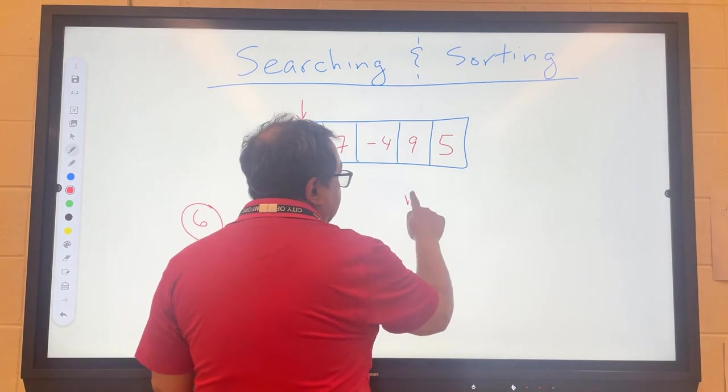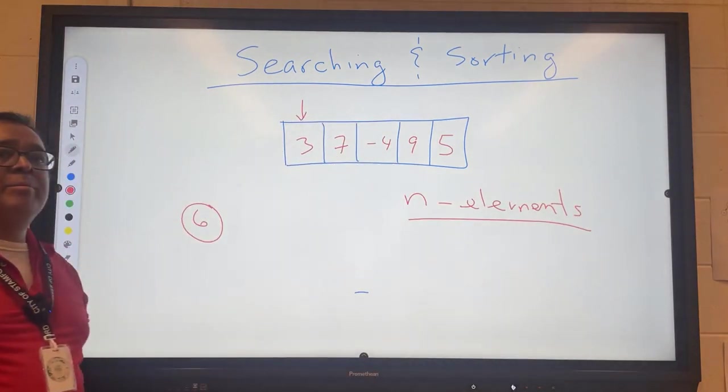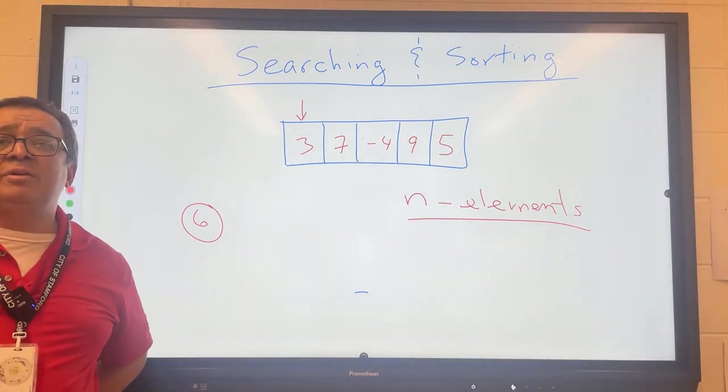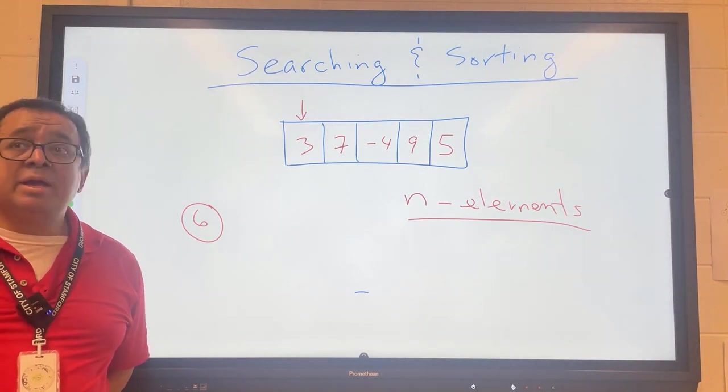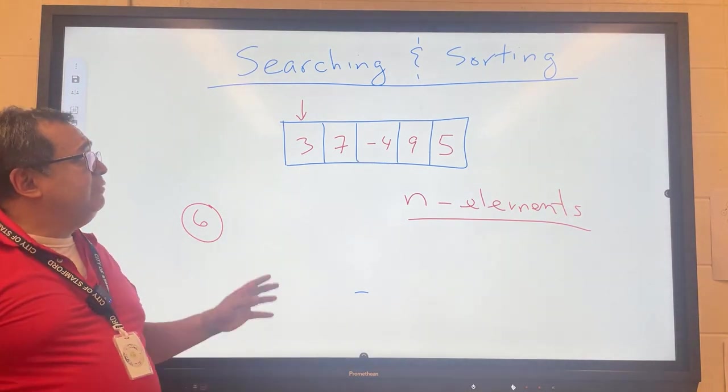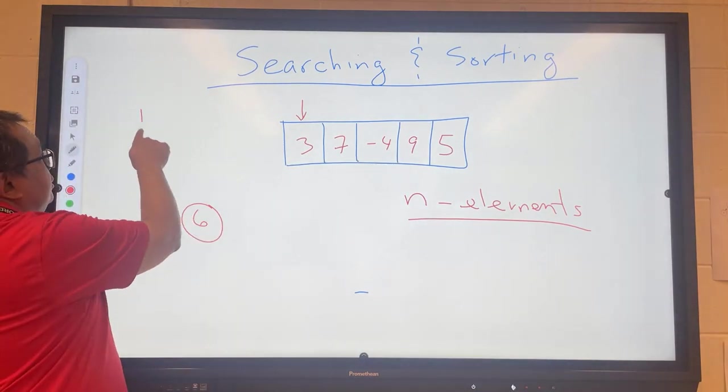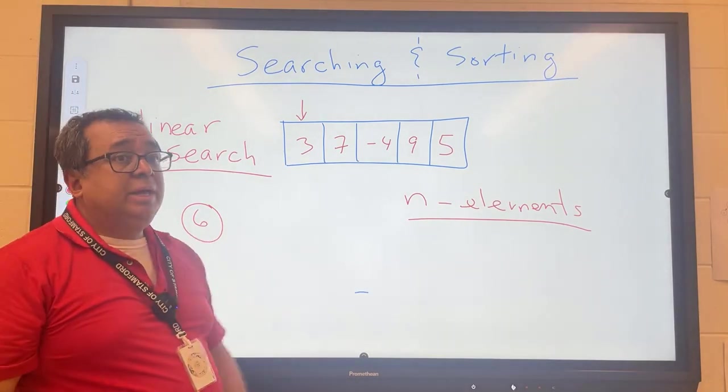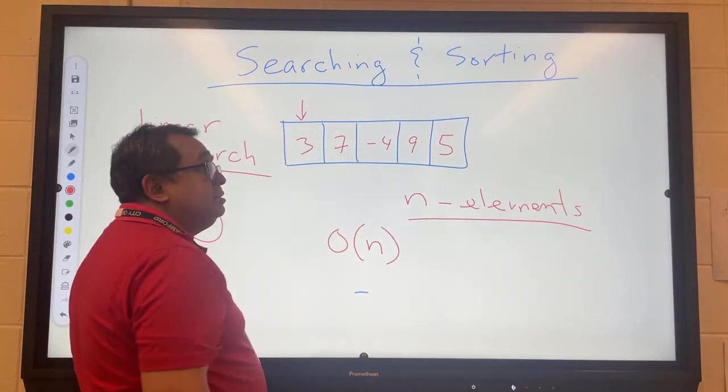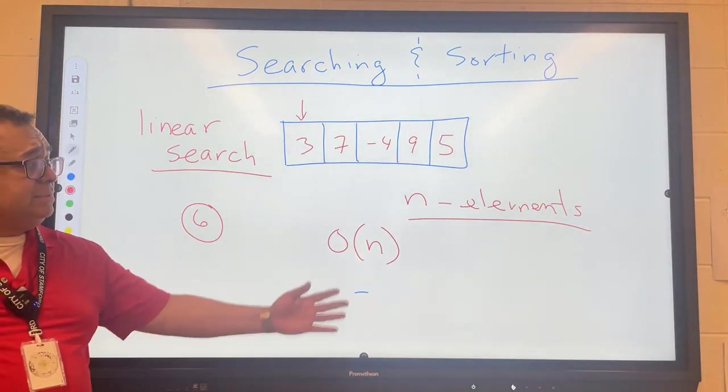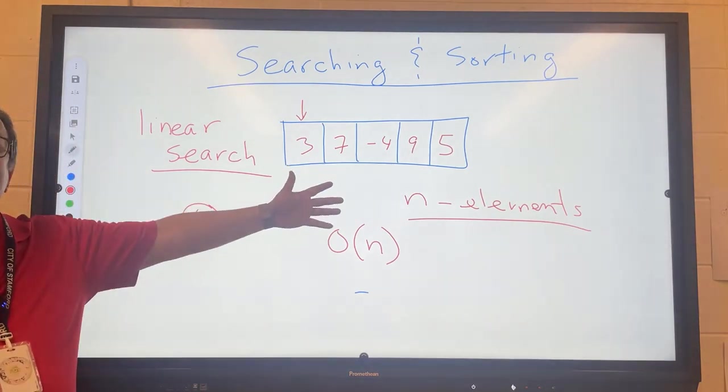If there are n elements in the array, worst case situation, how many comparisons will we have to do before we either find it or conclude that it does not exist in the array? You can see that if we do this searching one at a time, this is called a linear search. The worst case scenario is that it would take us on the order of n elements or n comparisons.